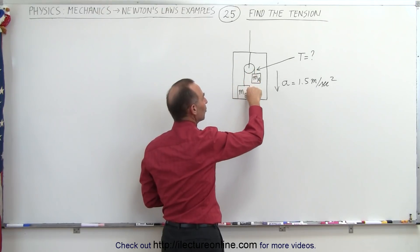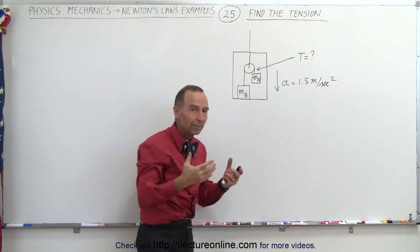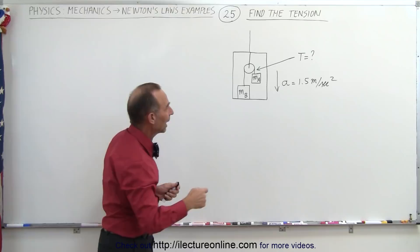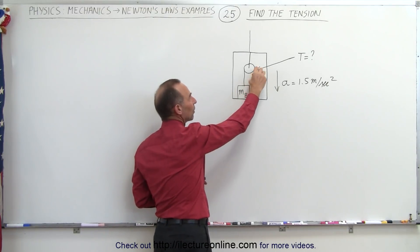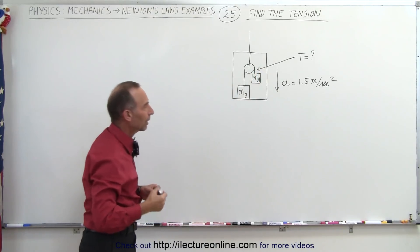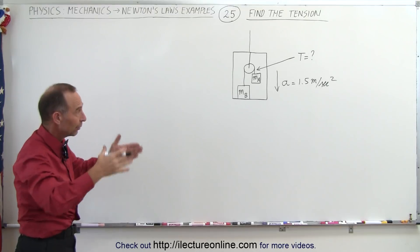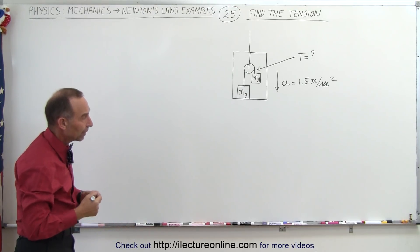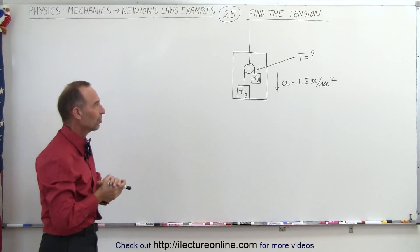Notice that this mass is bigger than this mass, so m_a will simply be suspended in the air there, and we're trying to find the tension in the string holding m_a in place. Now the whole elevator with the two masses is accelerating downward at 1.5 meters per second squared.